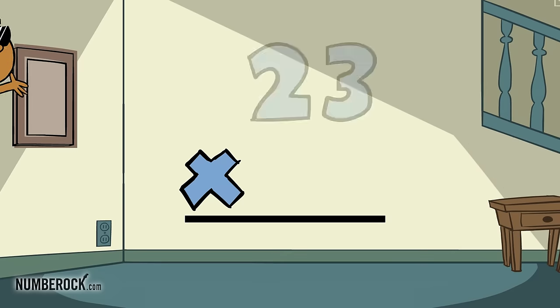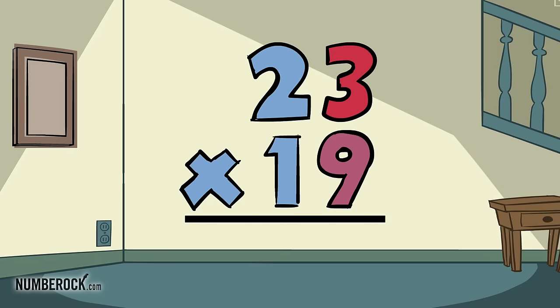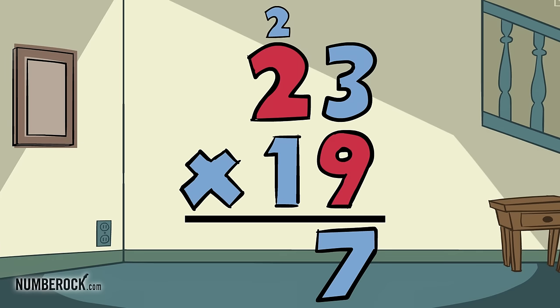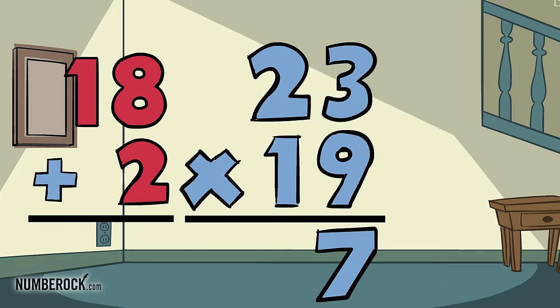Now coming on the scene, it's 23 times 19. 3 times 9 is 27, write the 7, carry the tens. 2 times 9 is 18, add the 2 and you get 20.